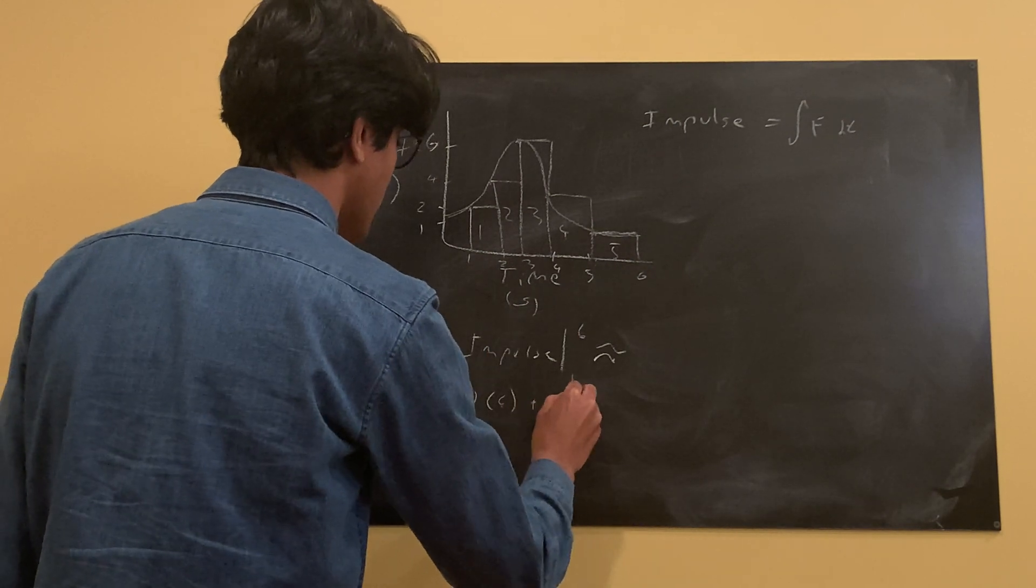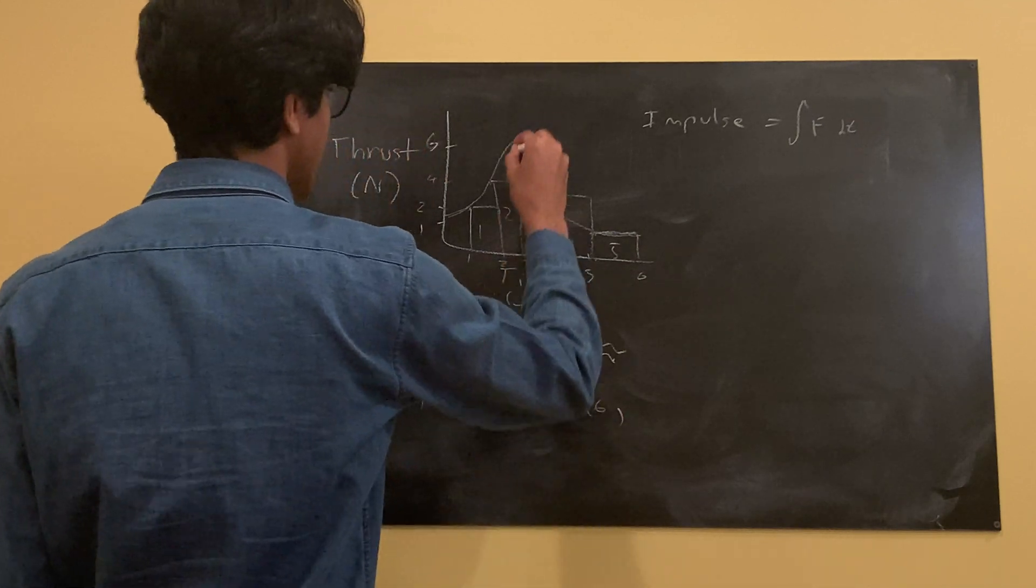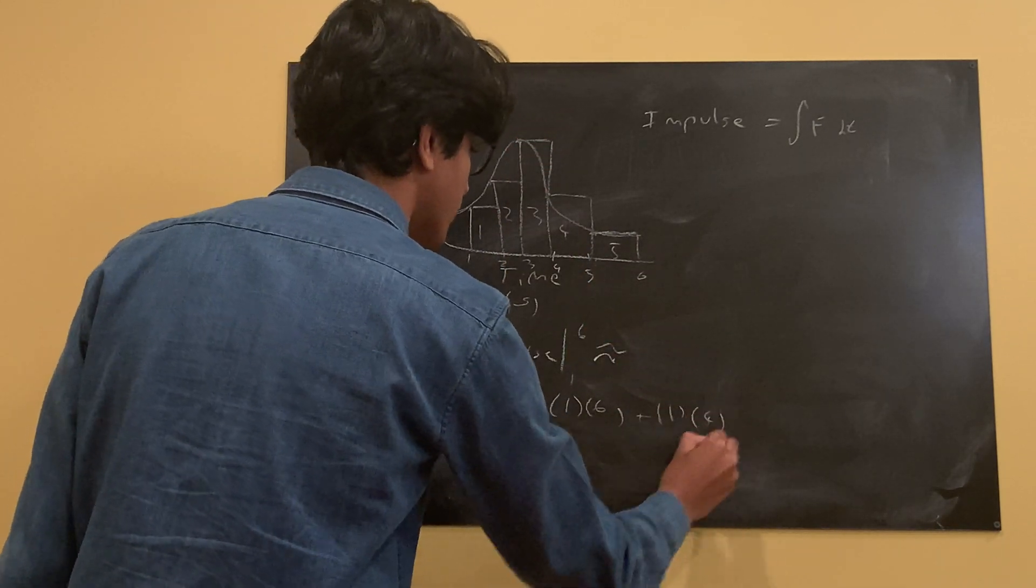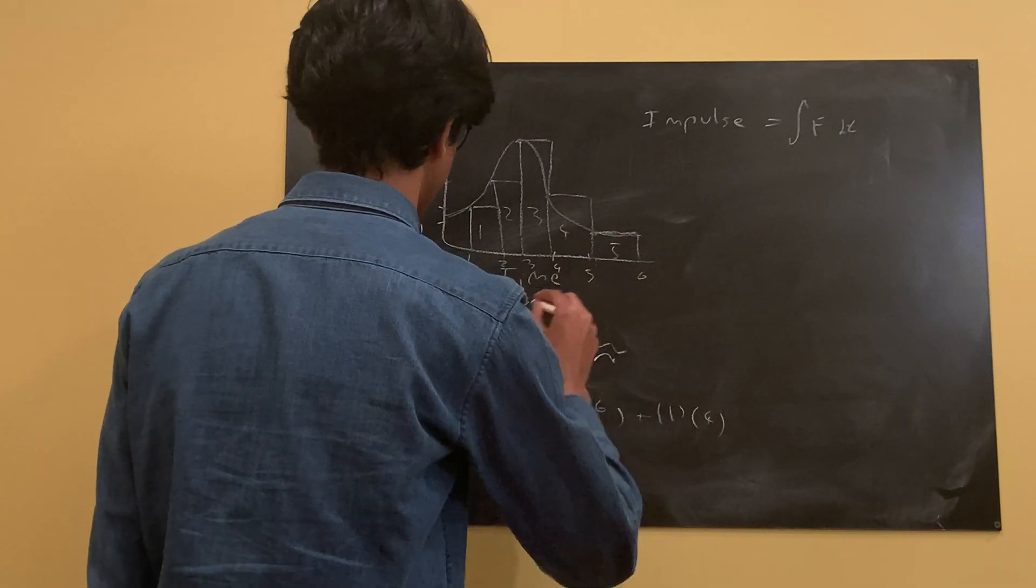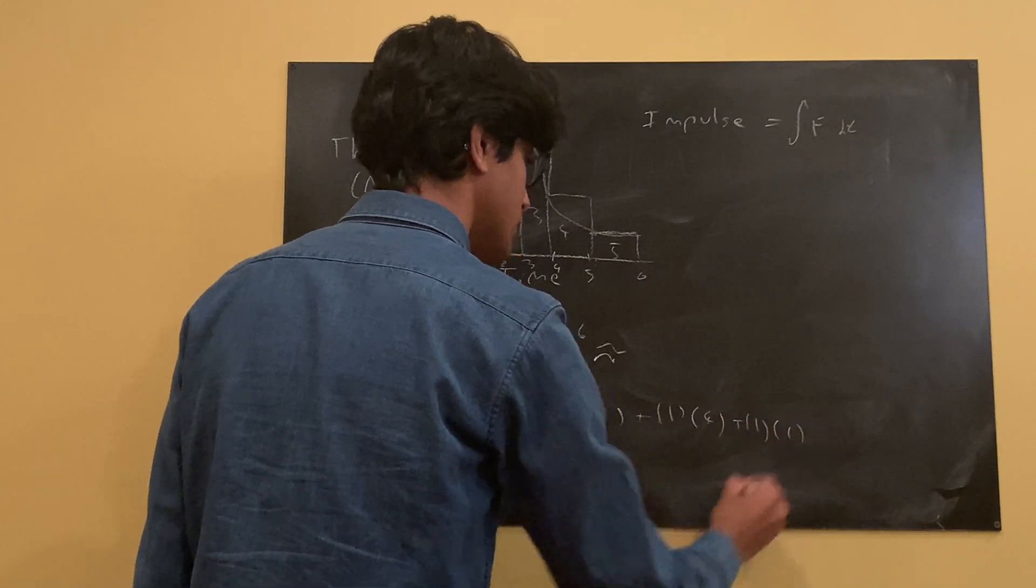Plus one times six, since this is the third one. Plus one times four. And then last one is going to have a one, so plus one times one.